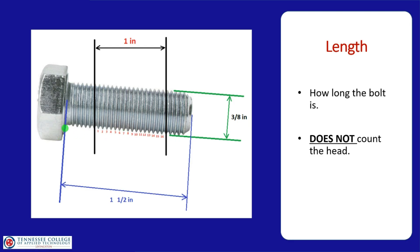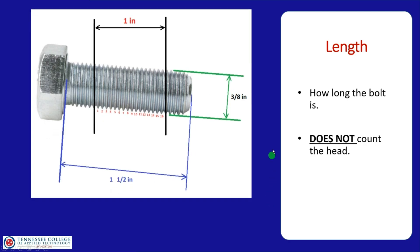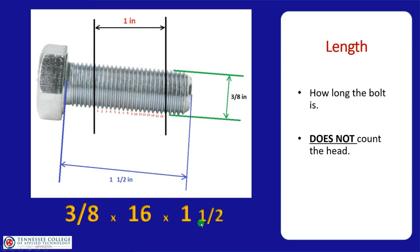In this example, the bolt is 3/8 inch in diameter, by 16 thread pitch, by one and a half inches in length — so this is a 3/8 by 16 by 1-1/2 bolt. That's how we write it when performing tests or describing this bolt.